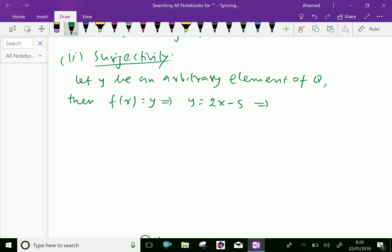From that, we can get the value of x. That is, y + 5 = 2x, so x = (y + 5)/2.